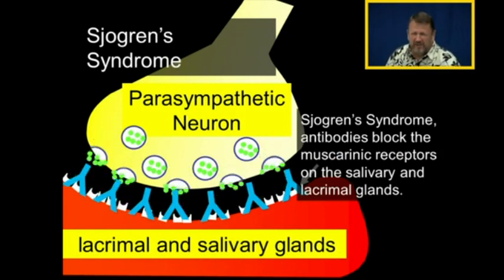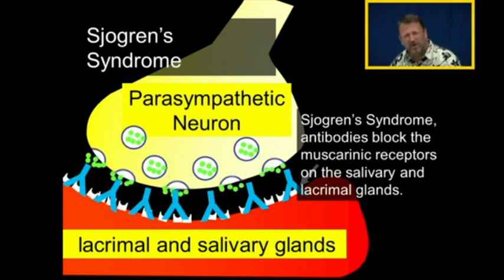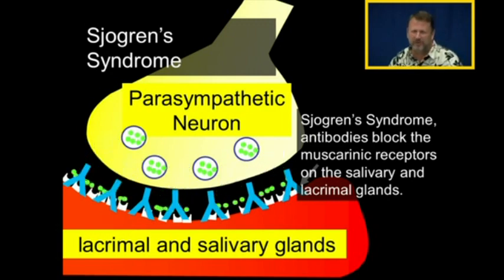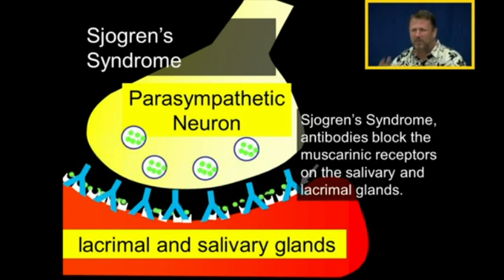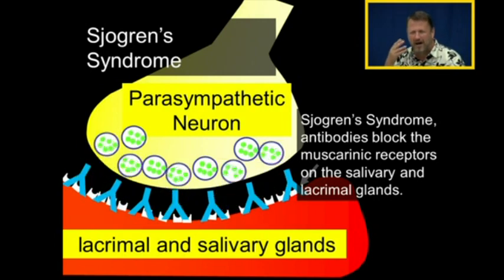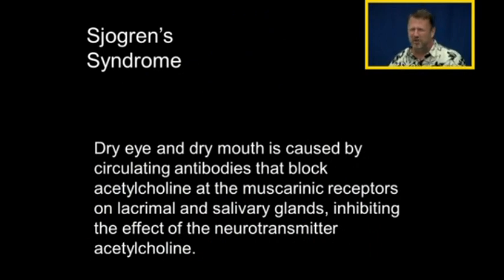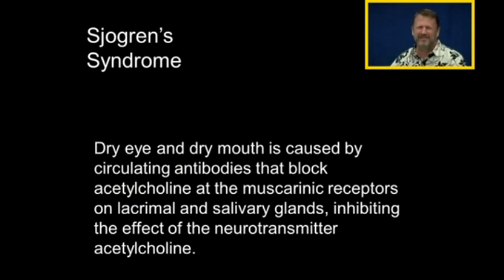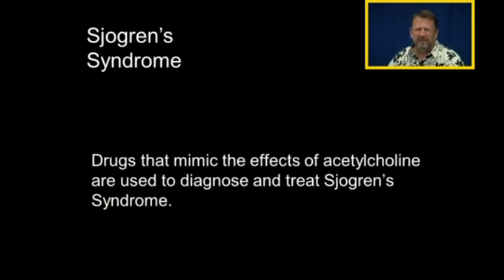Sjogren's syndrome is very similar to myasthenia gravis in its pathophysiology, however the symptoms are different. In Sjogren's syndrome, antibodies block the muscarinic receptors on salivary glands, which make your mouth wet, and lacrimal glands, which make tears. Sjogren's syndrome is caused by antibodies that block muscarinic receptors on the salivary and lacrimal glands, resulting in dry eye and dry mouth. It is caused by circulating antibodies that block acetylcholine at the muscarinic receptors on lacrimal and salivary glands, inhibiting the effect of the neurotransmitter acetylcholine.